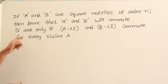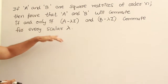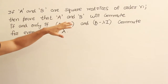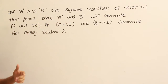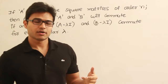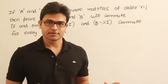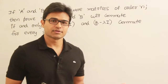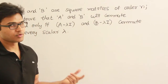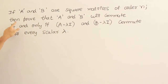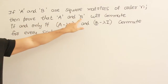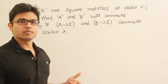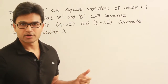So what is this question? It is an important question. If A and B are square matrices of order N, it means A and B are of size N by N. Square matrix means rows and columns are equal, and the order N means the number of rows and number of columns are both N. We have to prove that A and B will commute, meaning AB equal to BA.